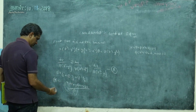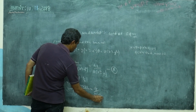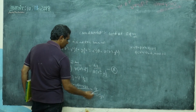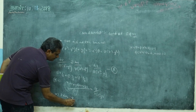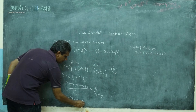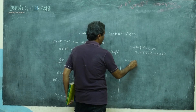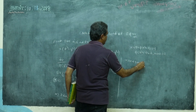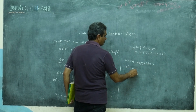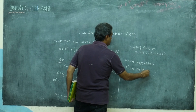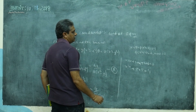We get x dx + y dy + z dz divided by 0 in the denominator. Since the denominator is 0, equating the numerator to zero: x dx + y dy + z dz = 0. Integrating, we get x²/2 + y²/2 + z²/2 = constant, so x² + y² + z² = c1. This is the first solution.